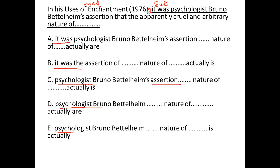Now, 'it was' is not referring to anything and cannot be the subject — so we eliminate those options. Similarly, 'psychologist's assertion' — assertion cannot be the subject in this case. But 'psychologist' can be the subject.